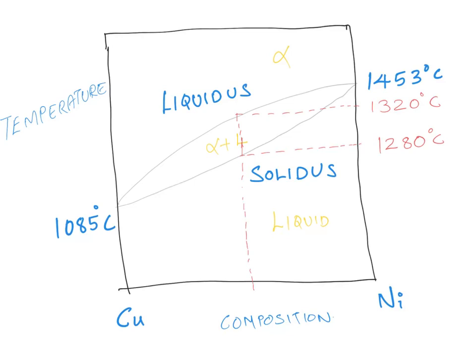Explaining a little bit more about this diagram for a given composition. Let me take an example. Let's say I have 50% each copper and 50% each nickel. I'm referring to weight percentage. Then I'm somewhere here.